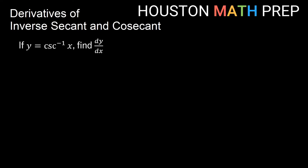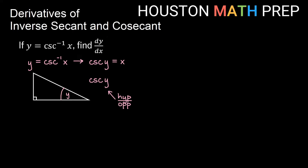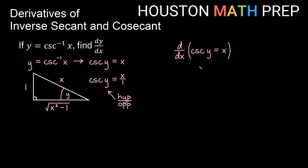For the inverse cosecant of x, we think of that statement as cosecant of y equals x and go back to our triangle. Cosecant is the hypotenuse over the opposite because it's the reciprocal of sine, which is opposite over hypotenuse. If we think of x as x over 1, then x is the hypotenuse and 1 is the opposite. Using the Pythagorean theorem, we get the same root as before. Now we move to the derivative process.